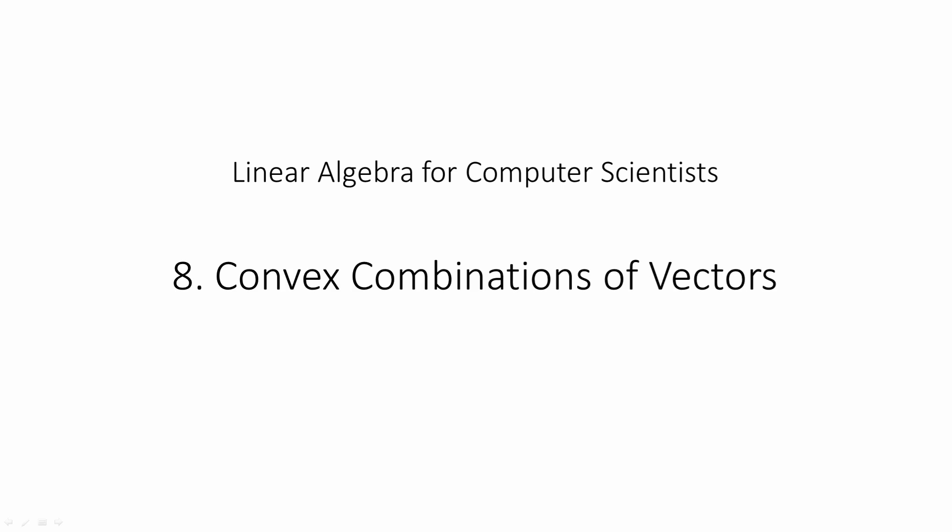In the previous video, you were introduced to linear combinations of vectors. A convex combination of vectors is a special type of linear combination.